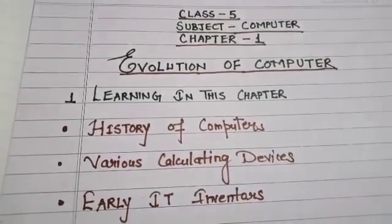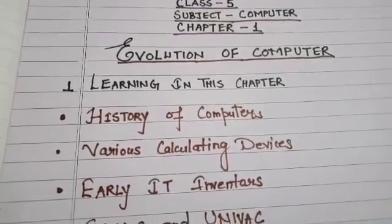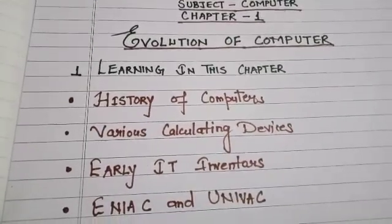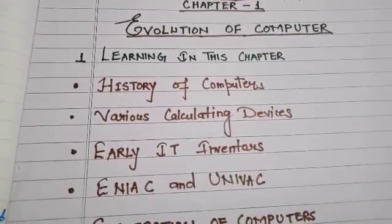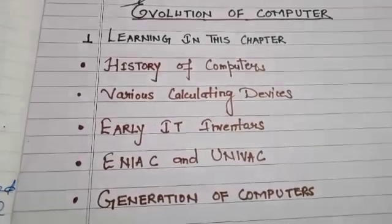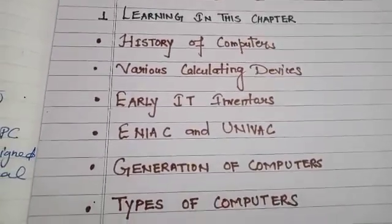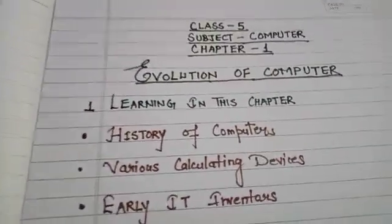In this chapter we will discuss about the history of the computer, various calculating devices, early IT inventors, ENIAC, UNIVAC, generations of computers and types of computers.